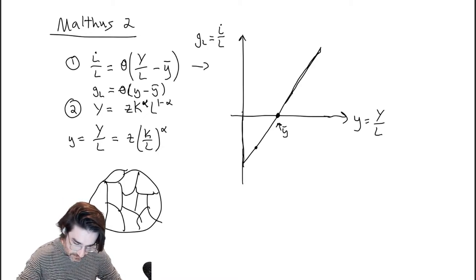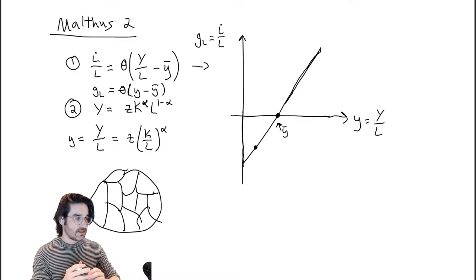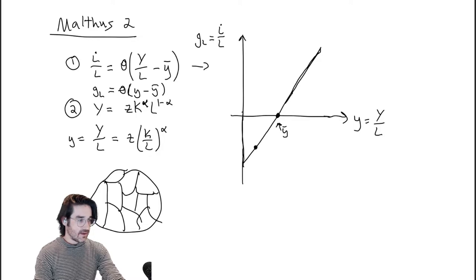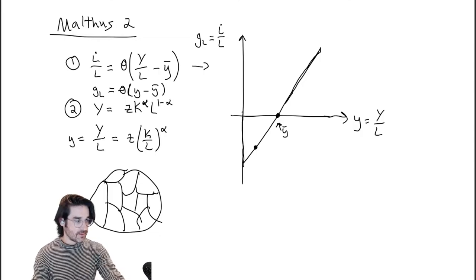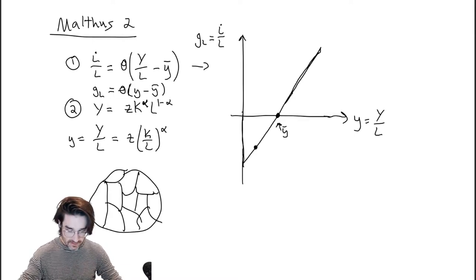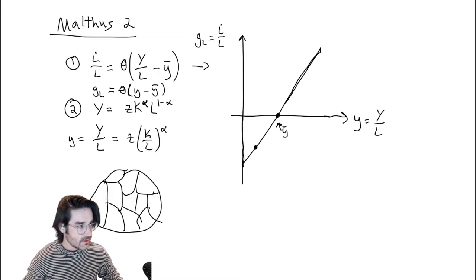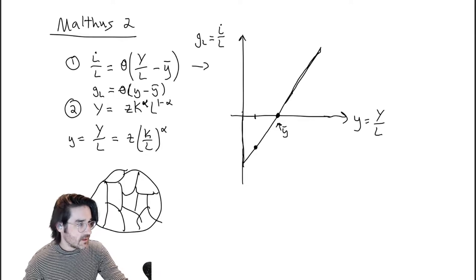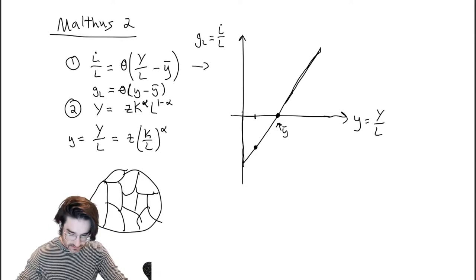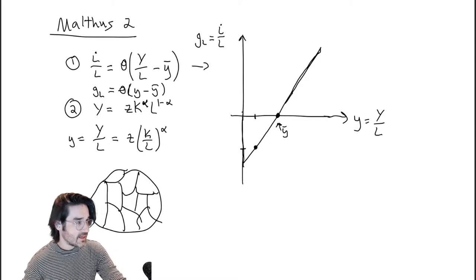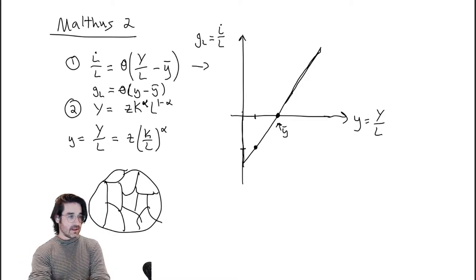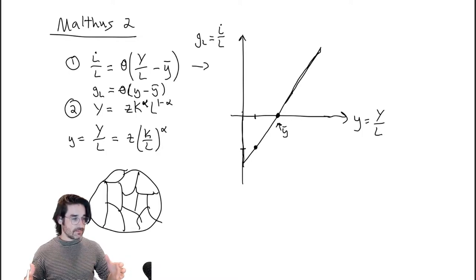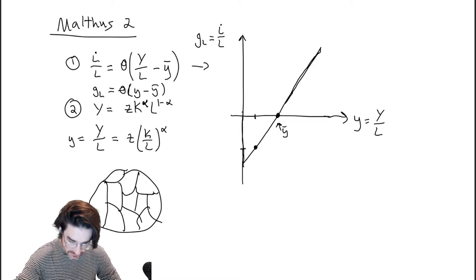What we worked through last time: your initial condition is basically a population value — L at zero — and once you know that you can map it into your standard of living at zero. Then you can say: I'm at this value Y-zero, which implies a certain value for the growth rate of population — in this case negative — so population goes down, plot size goes up, output per person goes up, and Y goes up.